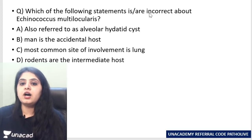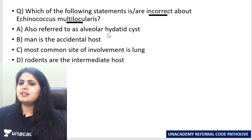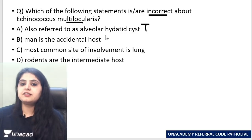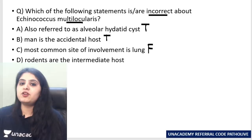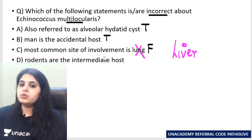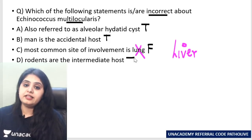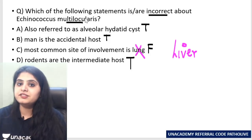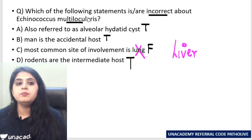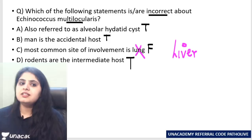Next question: which of the following statements is incorrect about Echinococcus multilocularis? 'Also referred to as alveolar hydatid cyst' — sounds true. 'Man is the accidental host' — sounds true. 'Most common site of involvement is lung' — incorrect, because most common site remains the liver. 'Rodent is the intermediate host for multilocularis' — yes, true. Intermediate host for granulosis is sheep or cattle.